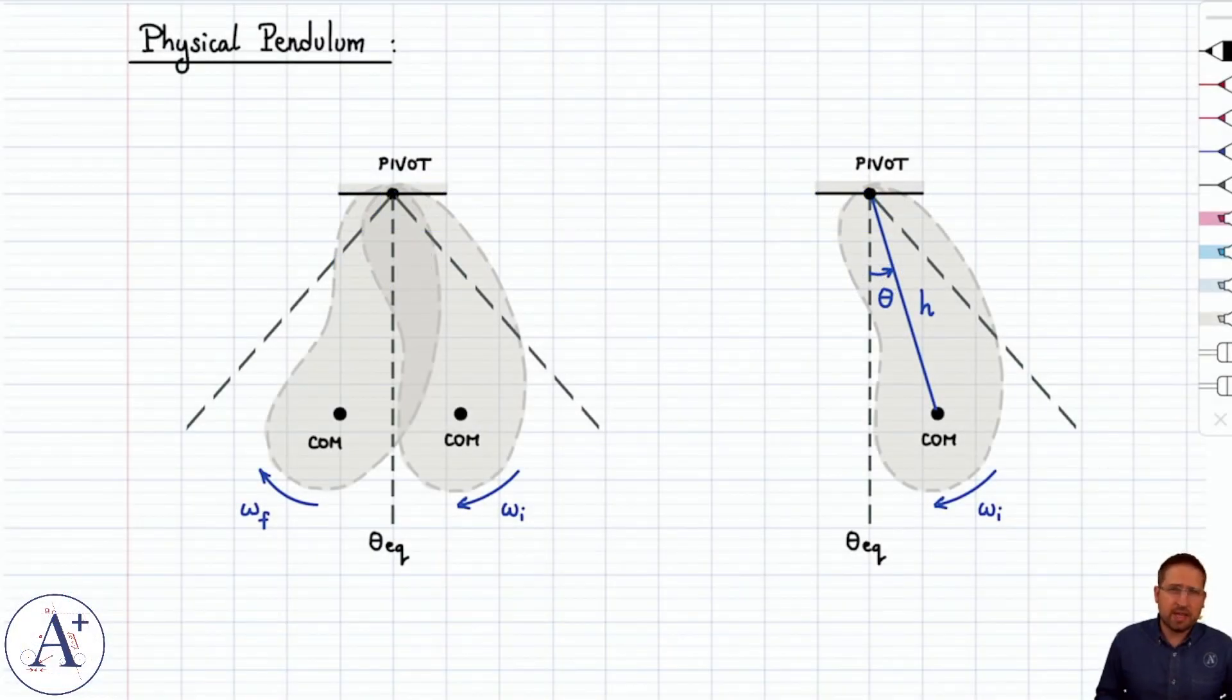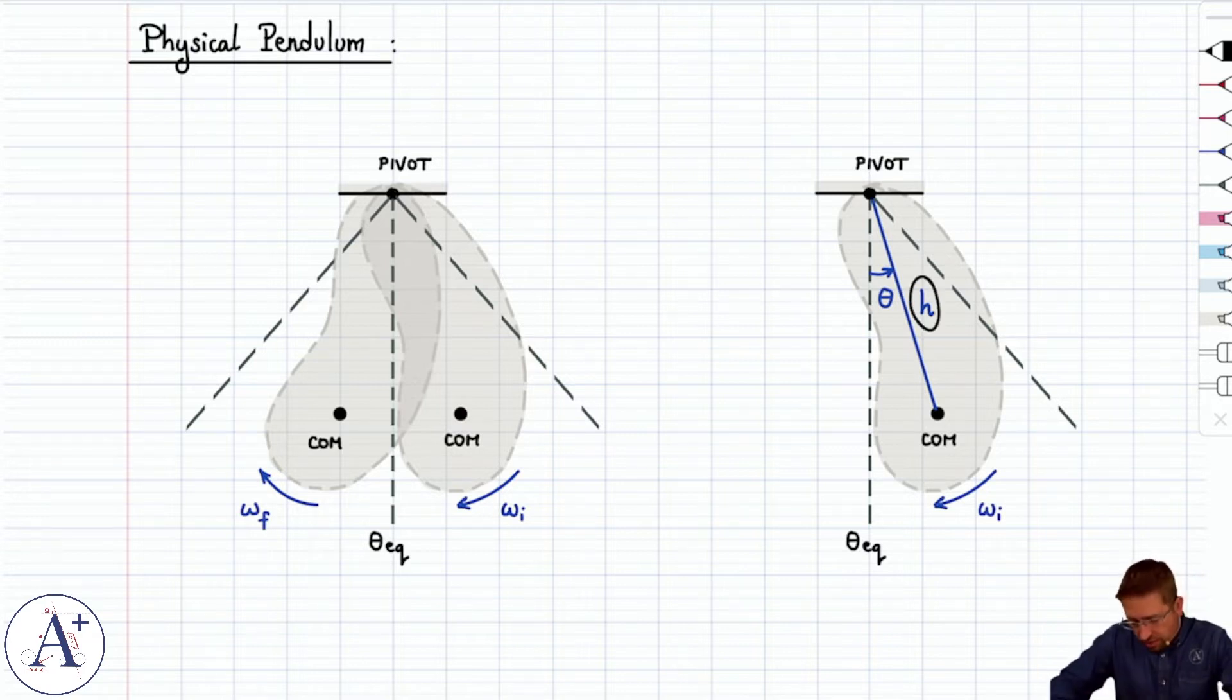Let's now apply conservation of mechanical energy into the physical pendulum. As a quick reminder, the physical pendulum is a physical object with a certain shape and size that oscillates back and forth about a pivot. One of the important quantities in that case is the distance h between the pivot and center of mass. That's because the center of mass is where the weight force is applied, and so that distance is going to matter for torque.